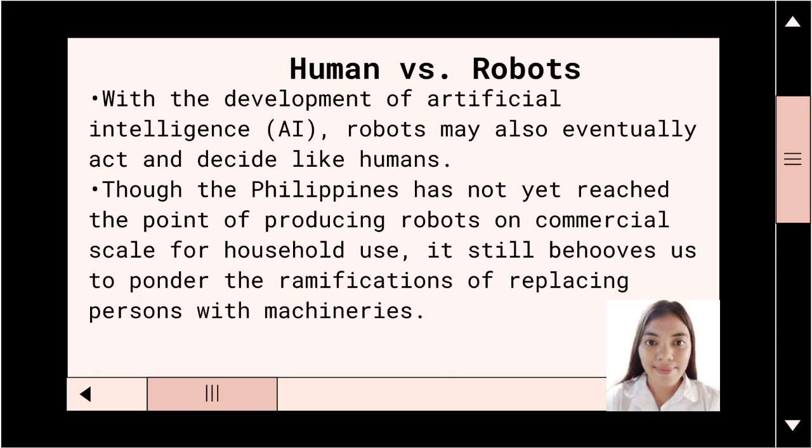Human vs. Robots: With the development of artificial intelligence or AI, robots may also eventually act and decide like humans. Though development has not yet reached the point of producing robots on a commercial scale for household use, it still behoves us to ponder the ramifications of replacing persons with machinery.